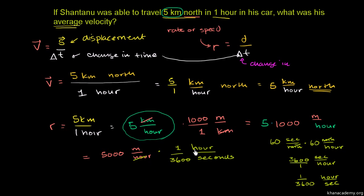And so now this hour cancels out with that hour. And then you multiply or appropriately divide the numbers right here. And you get this is equal to 5,000 over 3,600 meters per second. Meters per second. And if we divide, this is equal to 1.39 meters per second.